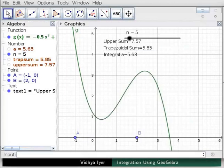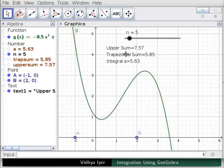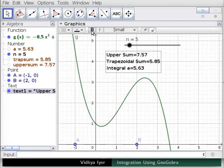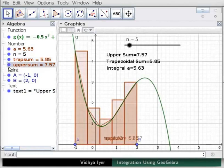Click on move and drag the text box in case you need to see it better. Now, click on the text box. Click on the graphics panel and select bold to make the text bold. In algebra view, check A, trapsum and upper sum to show all of them.